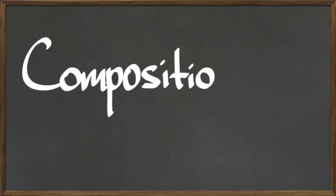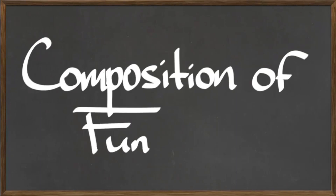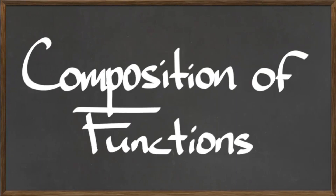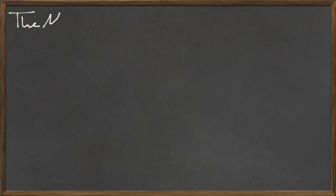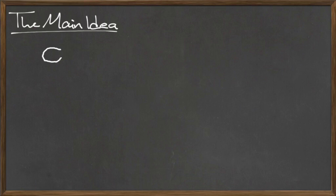In this video, we will discuss the composition of functions. Before we formally define composition, let's discuss the main idea with a real-world example. Let's say that you had some spare potatoes in your pantry and wanted to make mashed potatoes. From start to finish, we can visualize the process of making mashed potatoes as applying a series of functions.